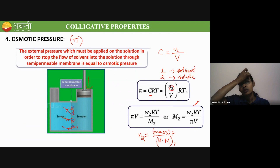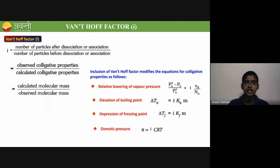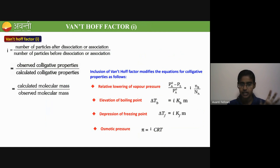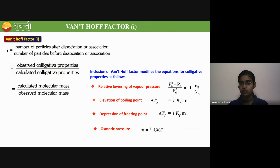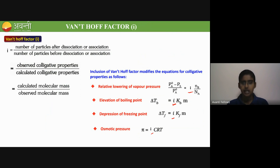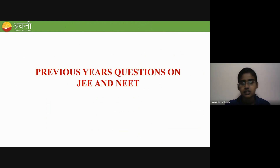The Van't Hoff factor is denoted by i. It equals the number of particles after dissociation or association divided by the number of particles before dissociation or association. If a molecule is getting associated or dissociated, the colligative property will change by a factor of i. So we take all the colligative property formulas and multiply by i to get the corrected, modified equations.